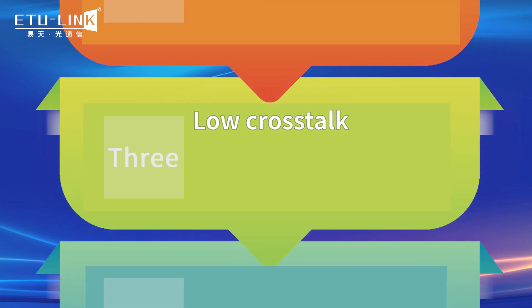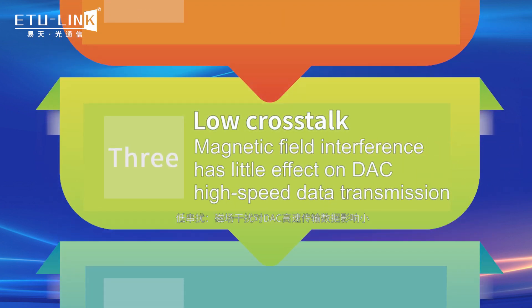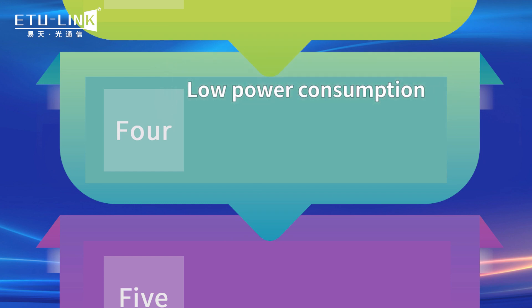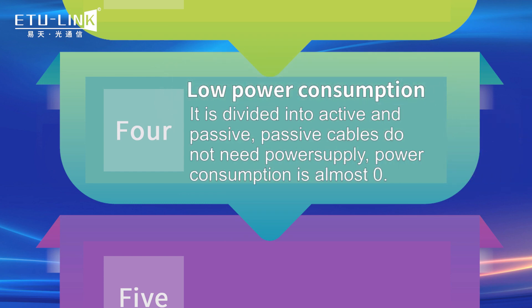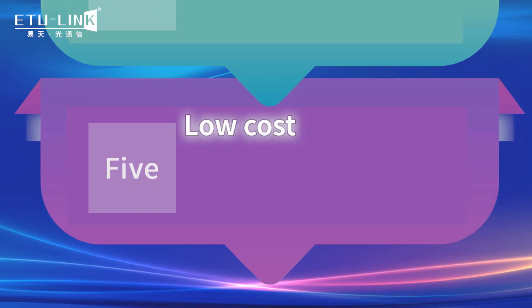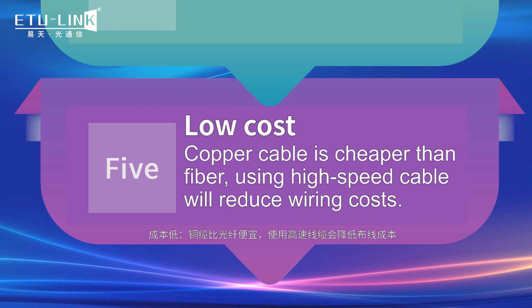Low cross-torque: magnetic field interference has little effect on DAC high-speed data transmission. Low power consumption: it is divided into active and passive types; passive cables do not need a power supply and power consumption is almost zero. Low cost: as copper cable is cheaper than fiber, using high-speed cables will reduce wiring costs.